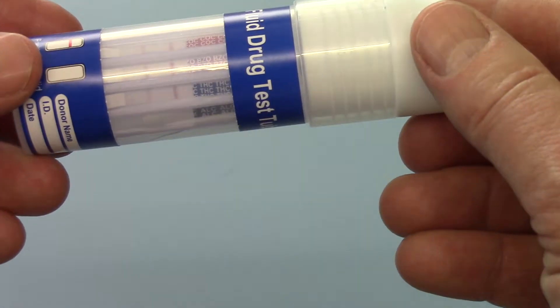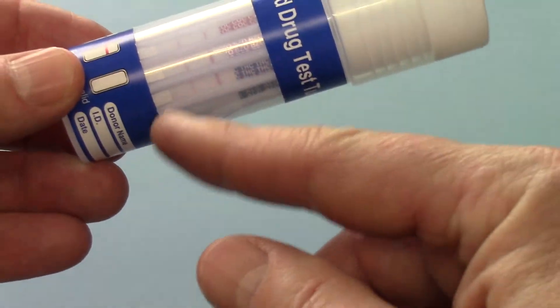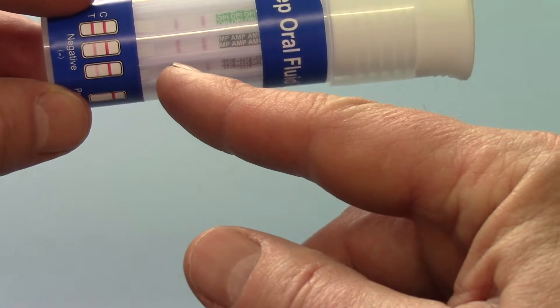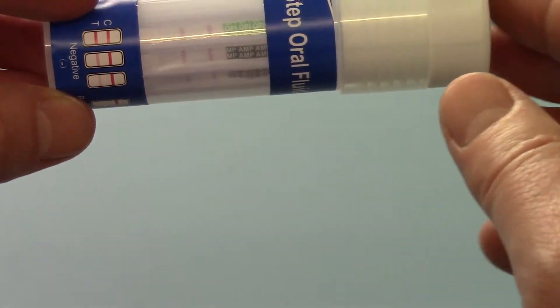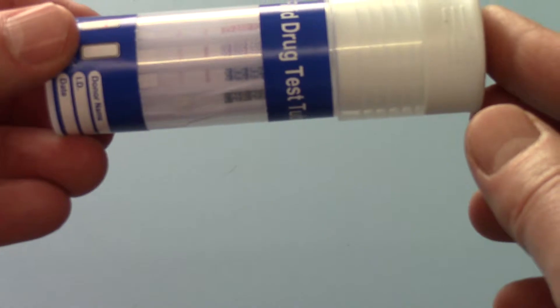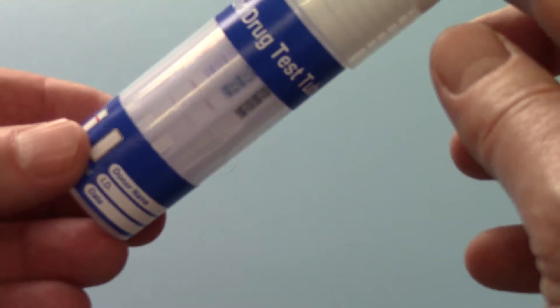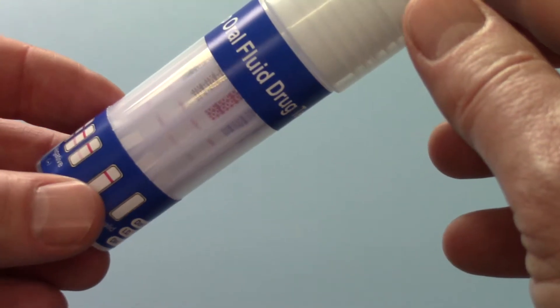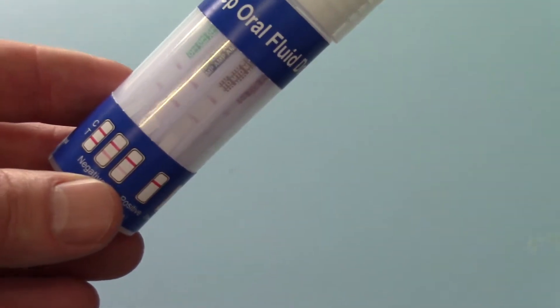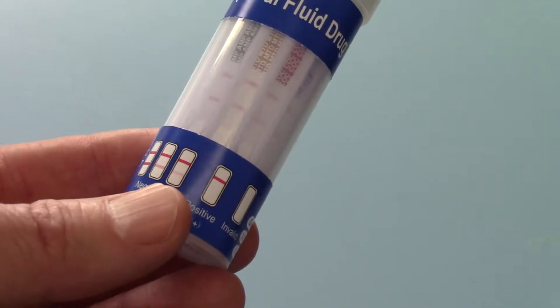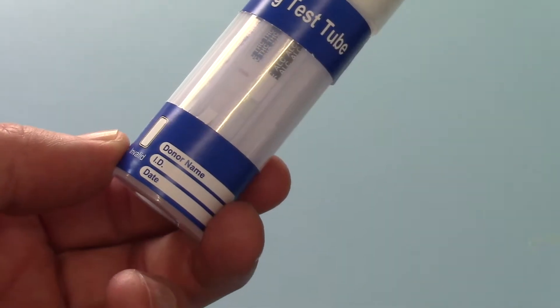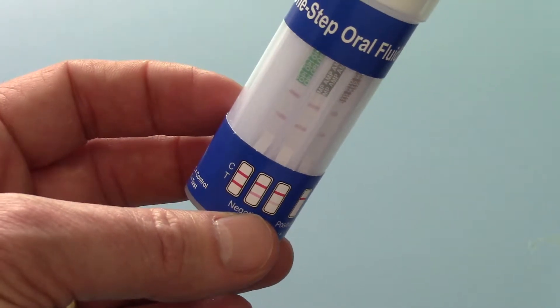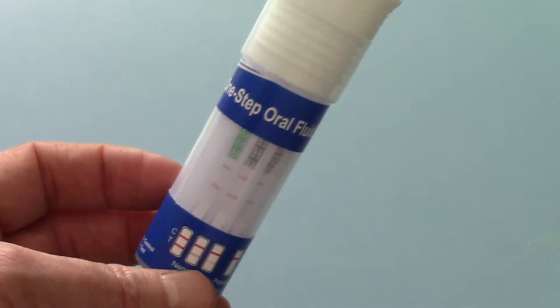What you will notice is the THC test result line is a lot thinner and fainter than the corresponding amphetamine or OPI test line. That's quite normal. This is a normal feature of these type of tests. You will see variation in color density, thickness and saturation of these test lines. But as long as there is a clear control line present in every one of those, then that has to be interpreted as a clear negative result for that particular drug group.